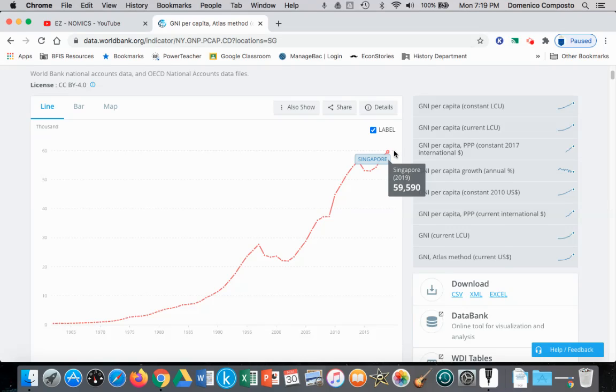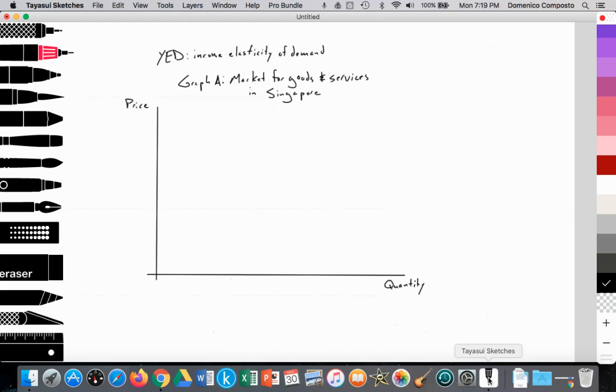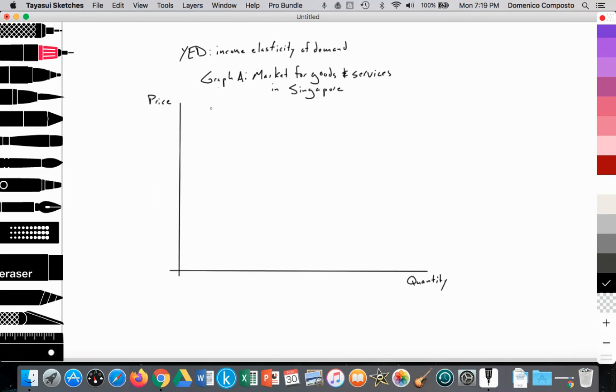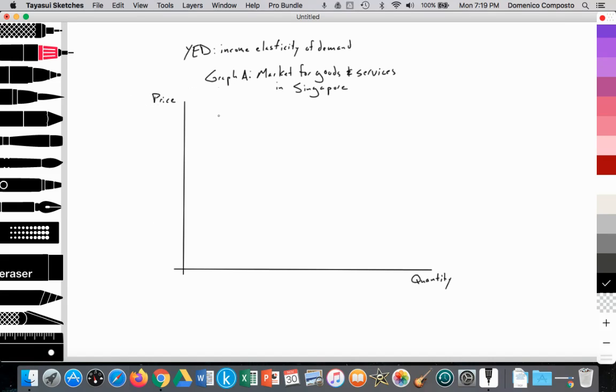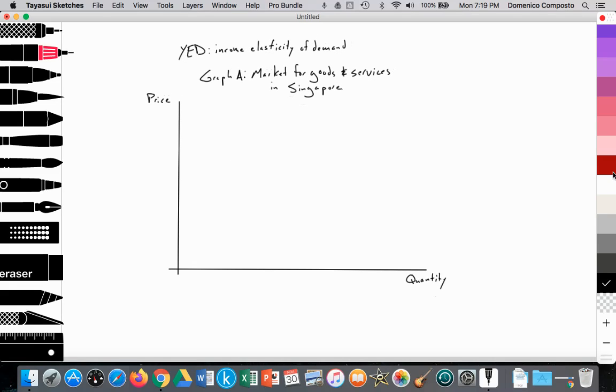So incomes are rising. Part of that is due to their decision to build an incredibly strong education system, which improved the quality of their labor, and thus labor being high skilled can command high income. Great decision on their part to invest in quality education. Since we are using Singapore as that example of rising income, we can then talk about income elasticity of demand and how a rise in income impacts the demand for normal and inferior goods and services. Let's take a few notes about the formula.